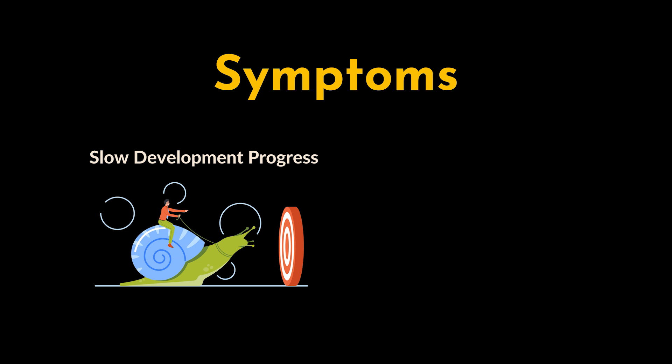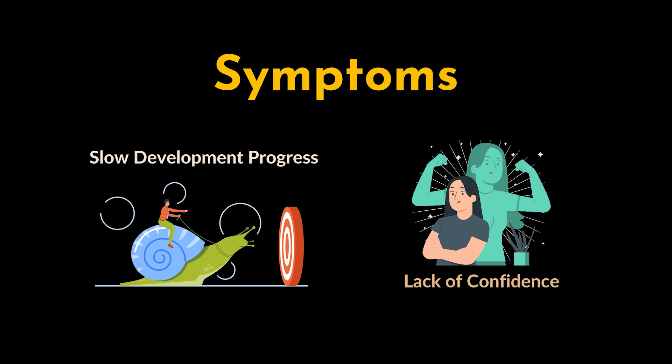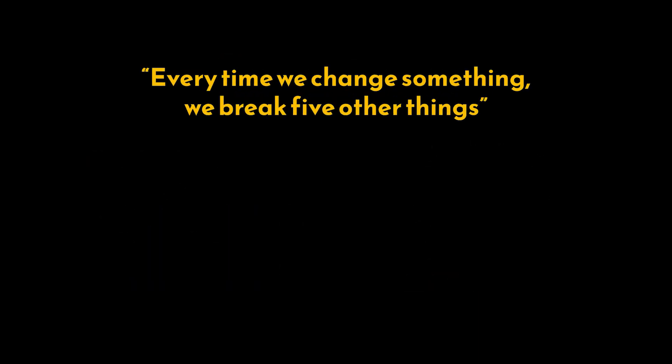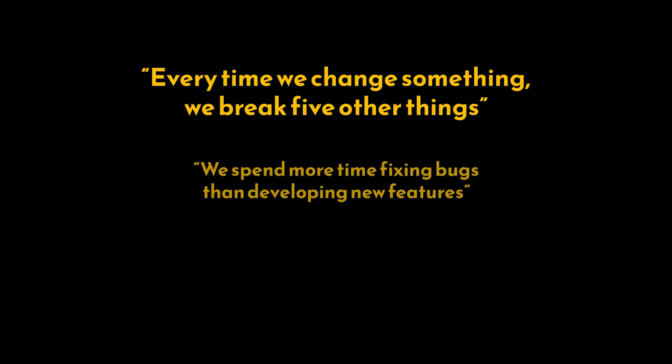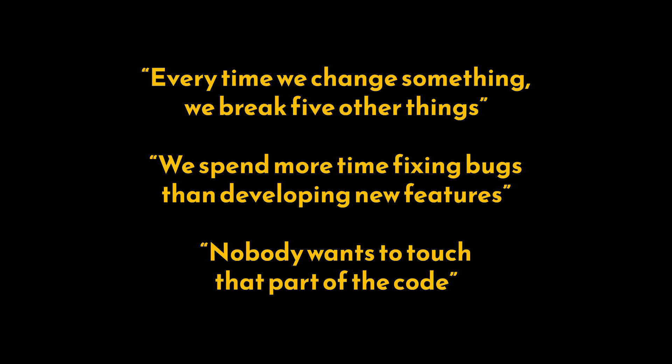Another symptom is slow development progress — the team progresses slowly because they must carefully navigate this fragile code base, often needing to spend extensive time on testing and verification. Finally, there is a lack of confidence: developers lack confidence in the stability of the system and the reliability of the code base. So if during development we find ourselves saying 'every time we change something we break five other things,' 'we spend more time fixing bugs than developing new features,' or 'nobody wants to touch that part of the code,' it's time to consider the solutions.